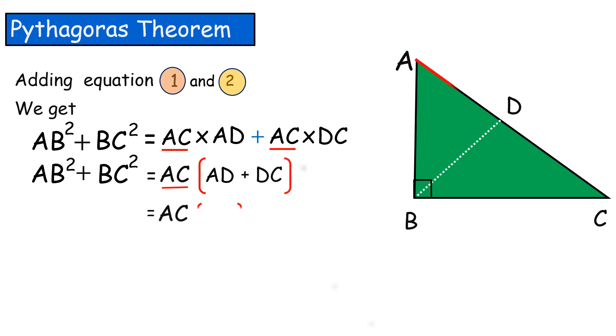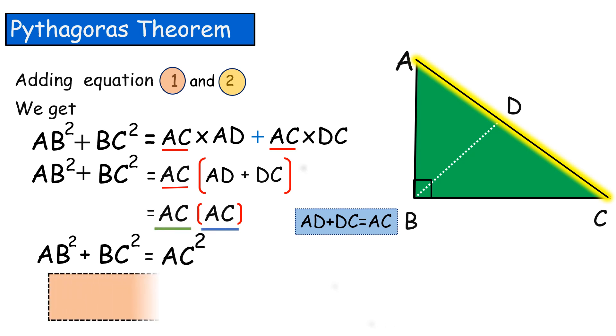AC into, from the figure, AD plus DC can be written as AC. AC into AC, nothing but AC². Therefore, AC² is equal to AB² plus BC².